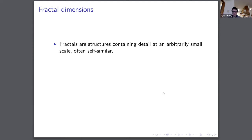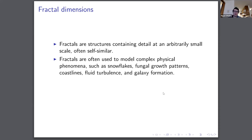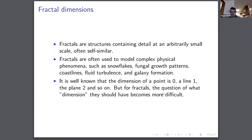Now we want to talk about dimension, which is most interestingly introduced in the context of fractals — structures containing detail at an arbitrarily small scale, often self-similar. They're used to model complex physical phenomena such as snowflakes, fungal growth patterns, coastlines, fluid turbulence, and galaxy formations. It's well known that a point has dimension zero, a line dimension one, a plane dimension two, and so on. But for fractals the question of what the dimension should be is more difficult, since a fractal doesn't look like a point, a line, or a plane — definitions become more difficult and more varied.